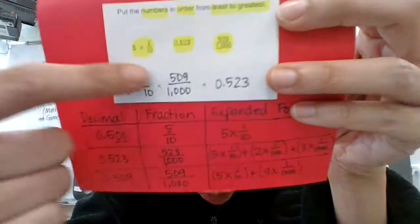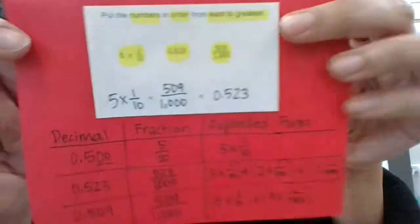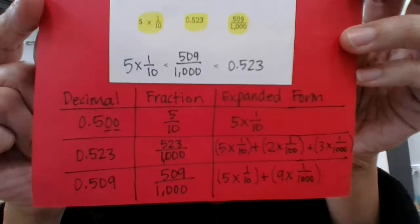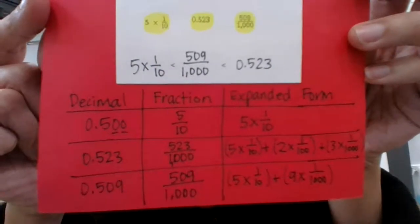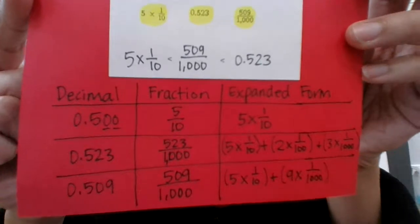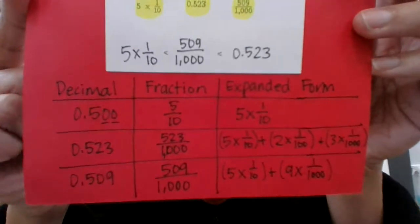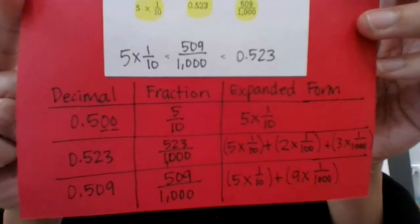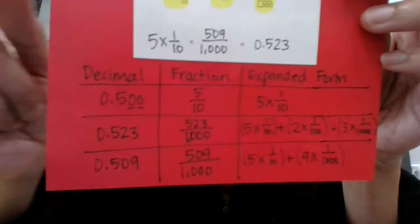Now, I didn't write the decimal form. I wrote whatever they gave you up here. Okay, well, I hope you understand this one. It's not that difficult. It might look confusing, but it's actually pretty simple. So if you don't understand that, make sure you ask me, okay? All right, moving on to the next one. Love you.